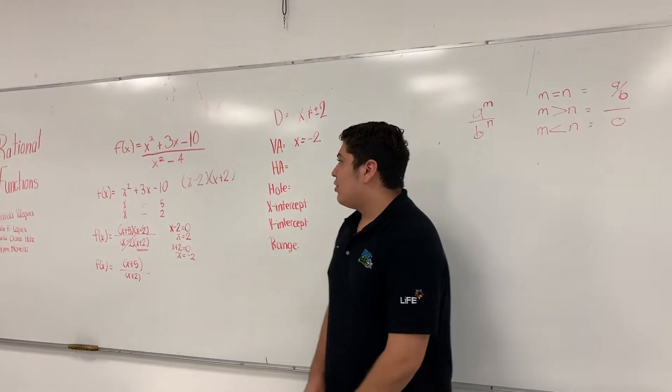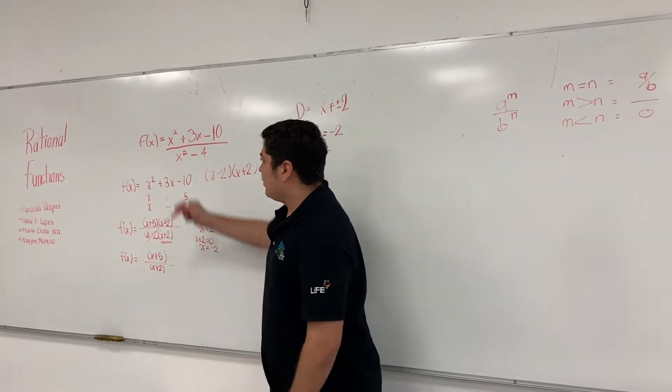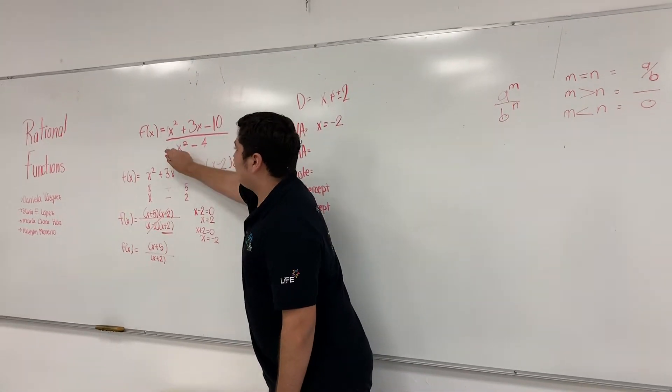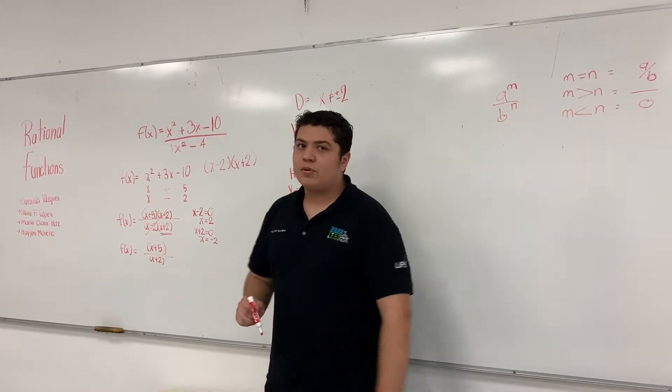In this case, we have 2 and 2. So we are going to divide 1 that we don't need to write. So it's going to be 1.